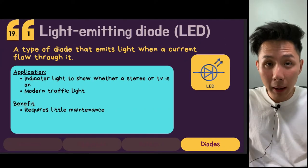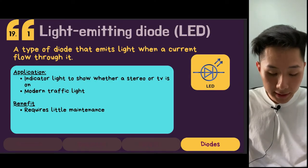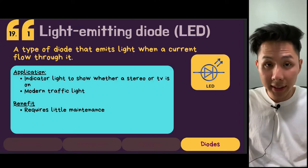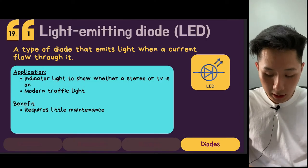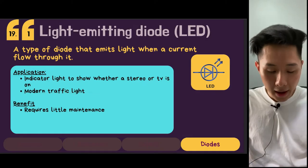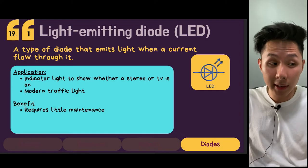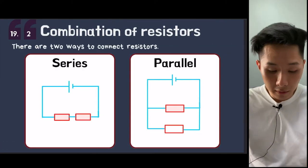A special type of diode called the light-emitting diode (LED) emits light when current flows through it. Some applications include indicator lights to show whether a stereo or TV is on, and modern traffic lights. The benefit of LEDs is that they require very little maintenance because they don't spoil easily.